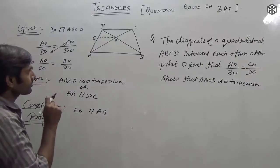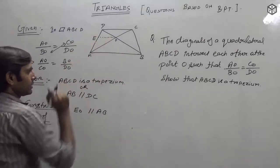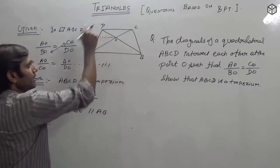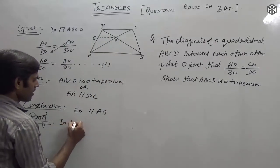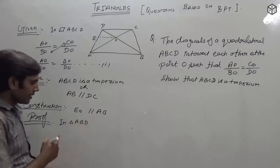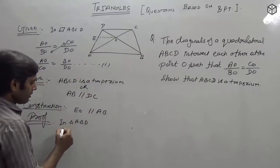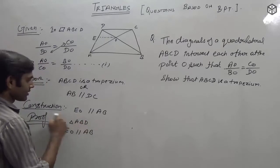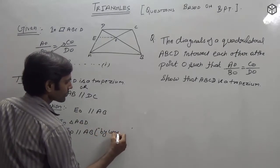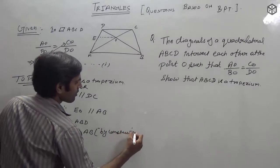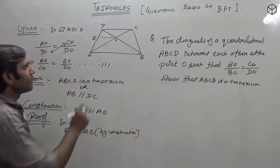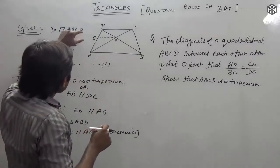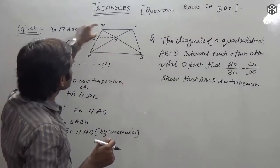Now let us go to the proof. This is equation number one. In triangle ABD, EO is parallel to AB by construction. By the BPT theorem — Basic Proportionality Theorem — in any triangle, a line parallel to one side divides the remaining two sides in equal ratios.